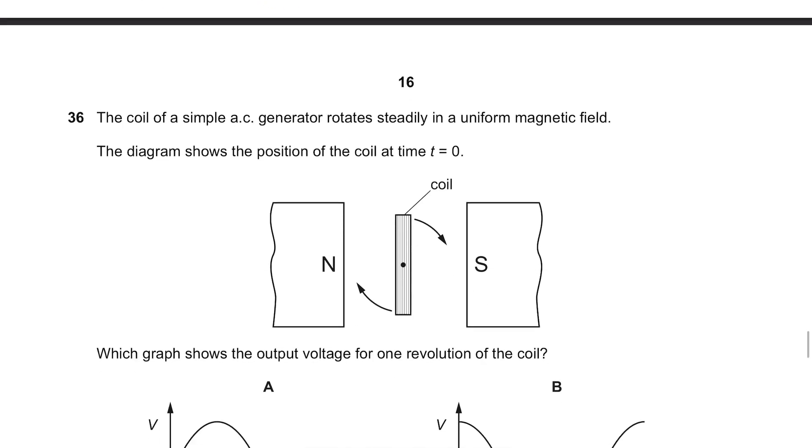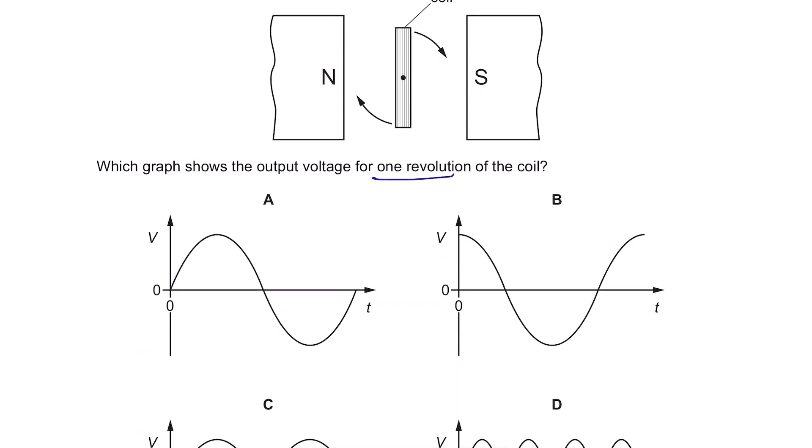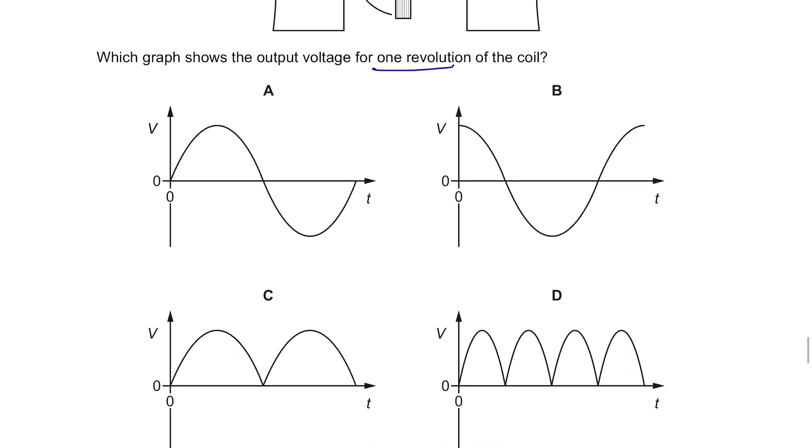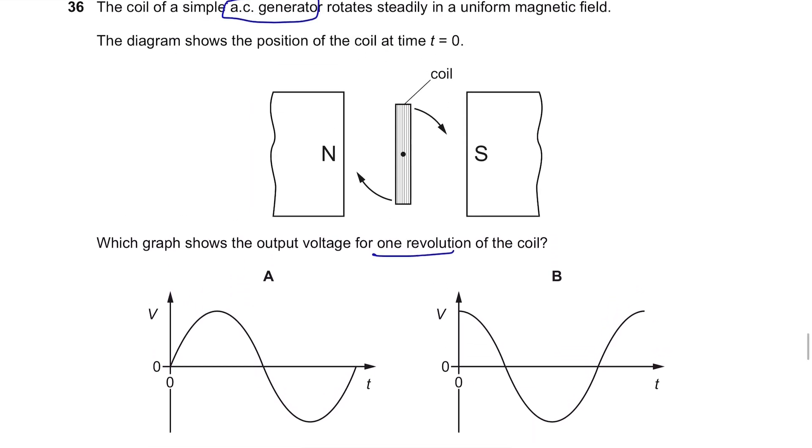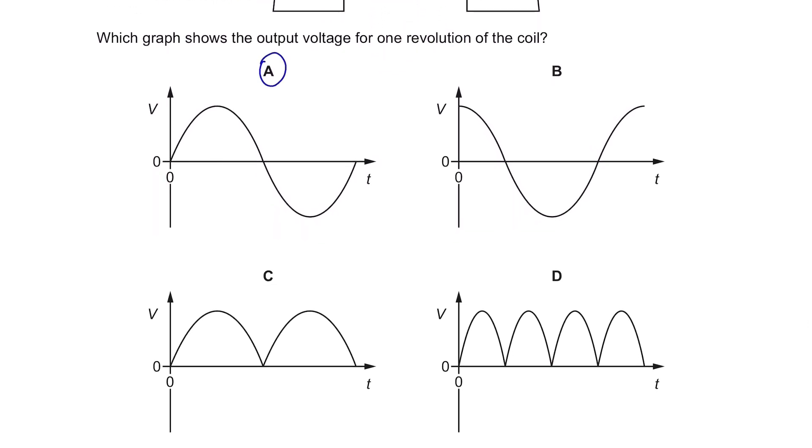Question 36. The coil of a simple AC generator rotates steadily in a uniform magnetic field. The diagram shows the position of the coil at time t equals 0. Which graph shows the output voltage for one revolution of the coil. Firstly, this will start from 0V. And it will have both positive and negative values because the direction changes. Therefore, it's A which starts at 0, not B because it starts at somewhere else and has both positive and negative values.